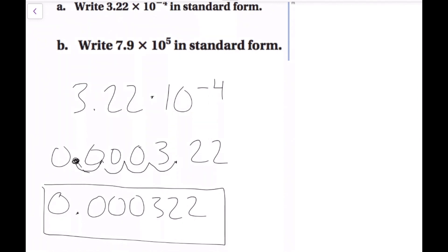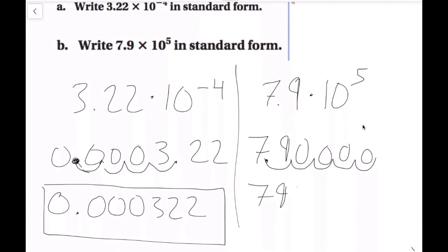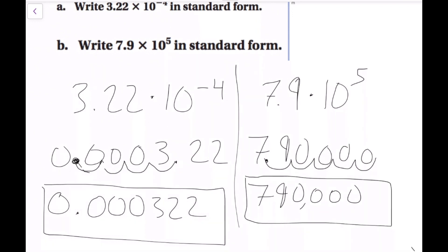For part B, we have 7.9 × 10⁵. We ask: is this number really big or really small? Since we have a positive exponent, we know it's going to be really big. To make 7.9 larger, we move the decimal to the right 5 spaces: 1, 2, 3, 4, 5. Fill in the empty spots with zeros and rewrite the number: 7, 9, 0, 0, 0, 0. Adding the comma, we get 790,000. That is 7.9 × 10⁵ written in standard form.